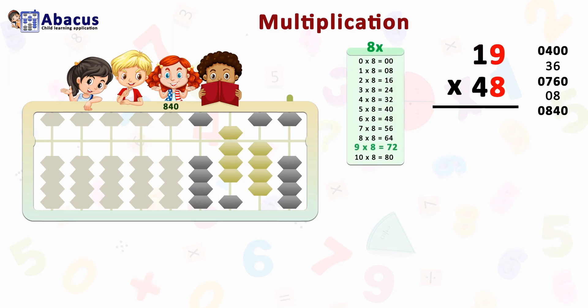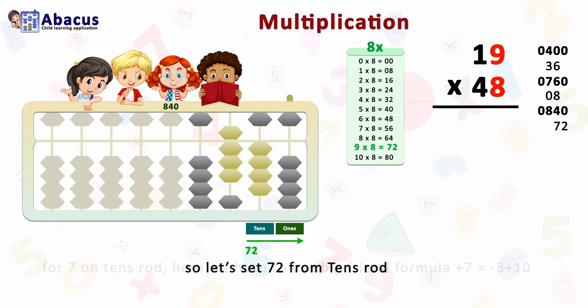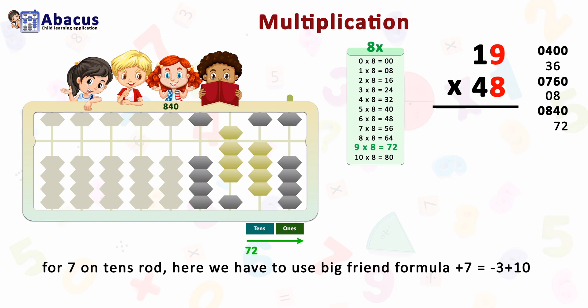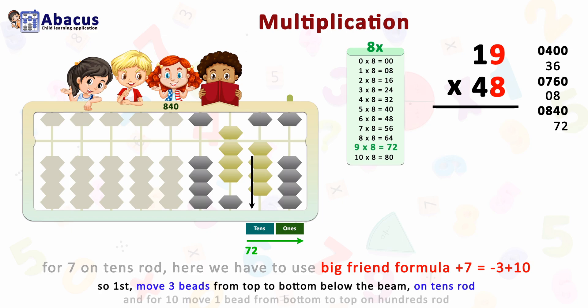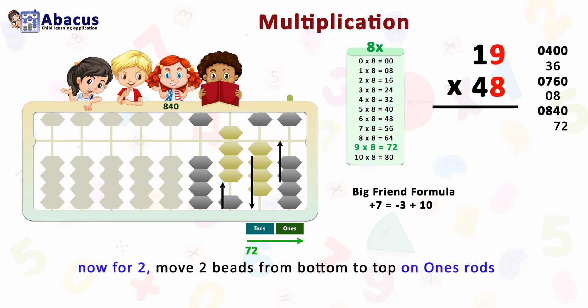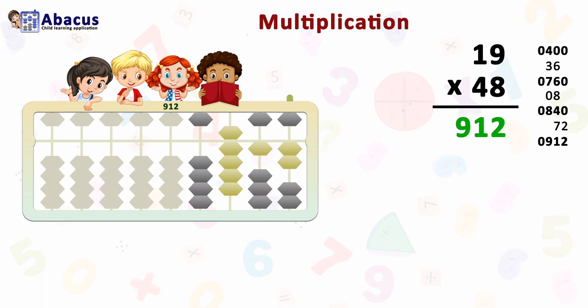The fourth step is 9 times 8 equals 72. Only two numbers remain — 9 and 8 — so only the tens and ones rods are used. Set 72 from the tens rod. For 7, we already have 4 on the tens rod, so use the big friend formula: plus 7 equals minus 3 plus 10. Move three beads from top to bottom on the tens rod and move one bead to top on the hundreds rod for 10. For 2, move two beads from bottom to top on the ones rod. The answer is 912.